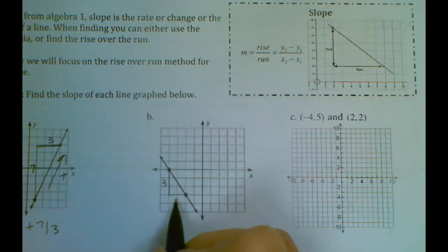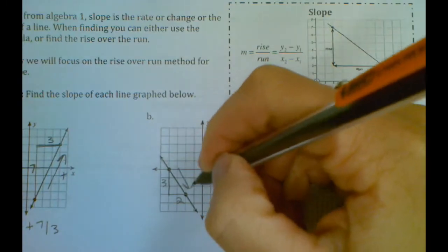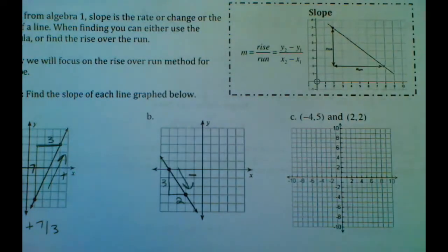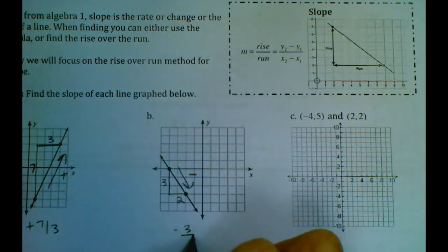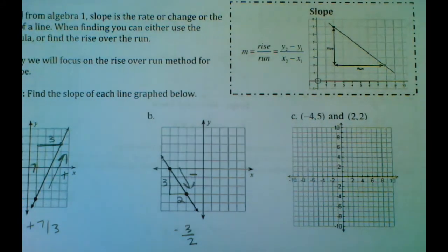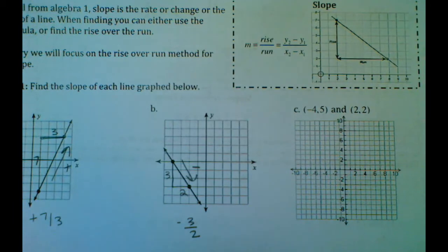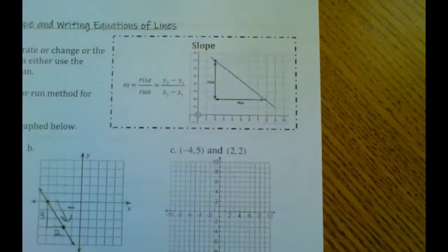For letter B, we have a rise of three and a run of two. This line is going down from left to right, so that's a negative slope. It's negative three over two for our slope on letter B.